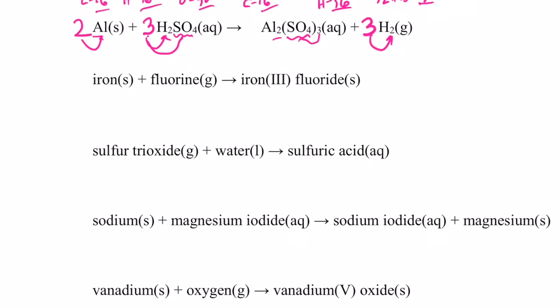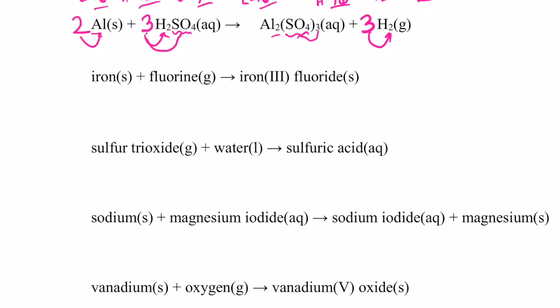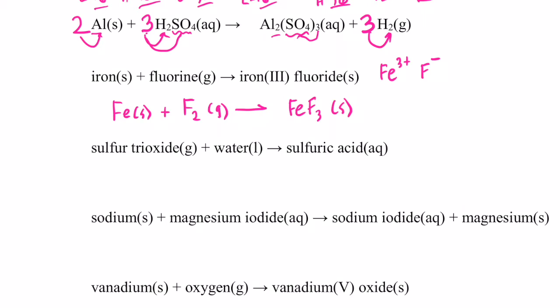What if the equation is given in words instead of formulas? We'll have to write the formulas. Iron is Fe. Fluorine — if you said F you weren't paying attention earlier — fluorine is one of the diatomic elements, so in its elemental state it's F₂. We're producing iron(III) fluoride: iron is 3+, fluorine is in group 17 so it's 1−, giving a formula of FeF₃.